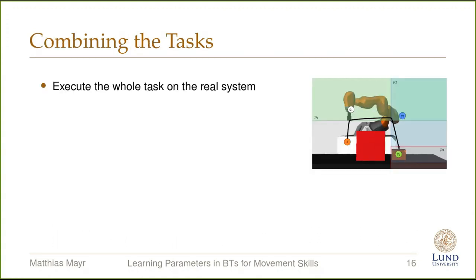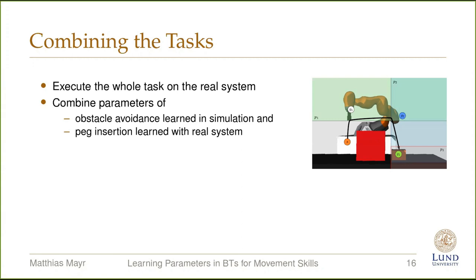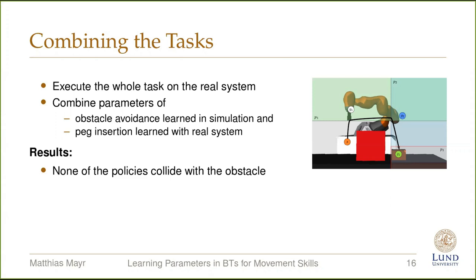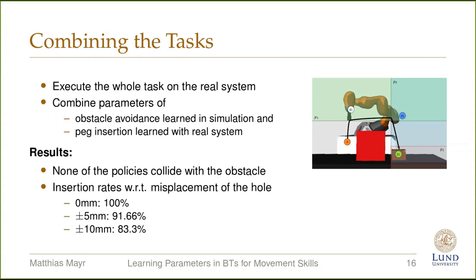The modular nature of the behavior trees allows us to combine the policies of the two tasks into one, or split a large policy into sub-policies. In this experiment, we explore whether two policies learned in simulation and reality can be combined, how well the combined policies perform, and to what extent the task can be accomplished if the hole is displaced. We combine the obstacle avoidance policies learned in simulation with the peg insertion policies learned on the real system one-to-one. None of the combined policies collide with the environment. With perfect hole positioning, an insertion rate of 100% was achieved. A misalignment of 5 mm led to a success rate of 91%, while a displacement of 10 mm still allowed an insertion rate of 83%. These results showcase the modularity and efficacy of our BTMS method.